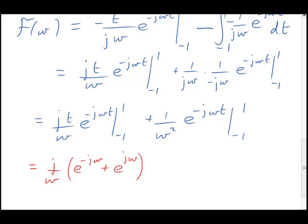Here's the result of just the first term for the moment. Putting t equals 1, we get j over omega e to the minus j omega. Putting t equals negative 1 gives us minus e to the plus j omega. However, we have to subtract that because it's the bottom limit. So the minus turns back to a plus. That gives us the expression here.